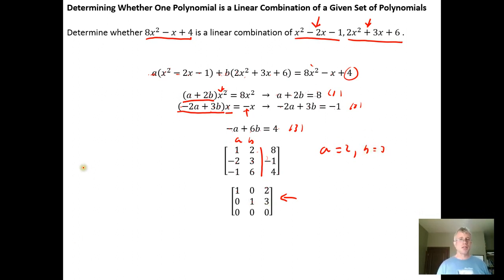And that tells us that 2 times x² minus 2x minus 1 plus 3 times 2x² plus 3x plus 6 will add up to give us the 8x² minus x plus 4.